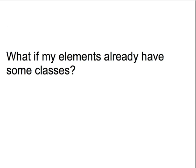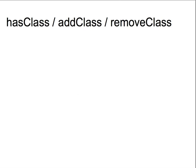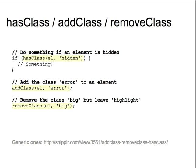So, we're changing class names, which is a lot better than changing styles directly. But what if our elements already have classes that need to be maintained? For example, if we have a paragraph with the class 'special' and we do className equals 'inactive' in JavaScript, we've overridden the original class name and probably screwed up our page. What we really need instead are functions that add classes, remove classes, and check to see if an element has a particular class name. Unfortunately, these aren't built into JavaScript by default, but they're a part of most JavaScript libraries, and there are standalone examples on the web as well.